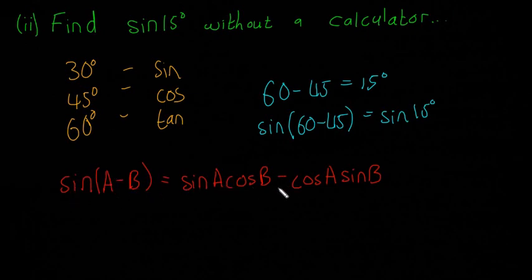Sine of A minus B is equal to sine of A cos of B minus cos of A sine of B, and you just get that from the tables book. Now I'm going to sub these numbers into this formula here.